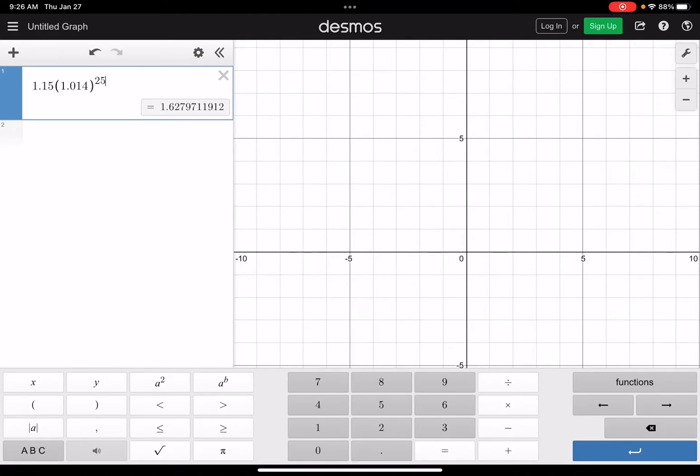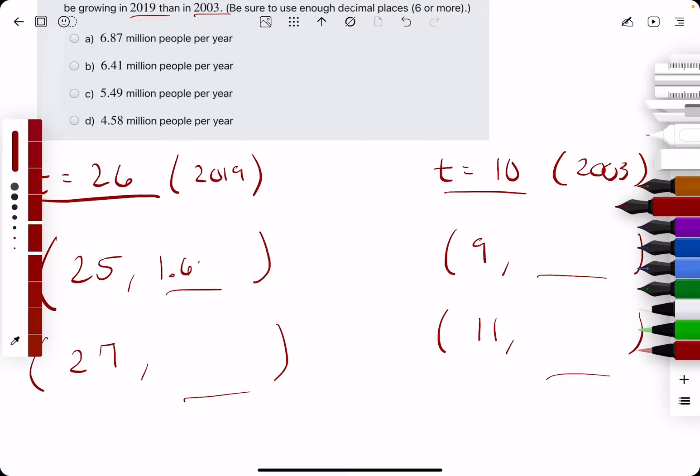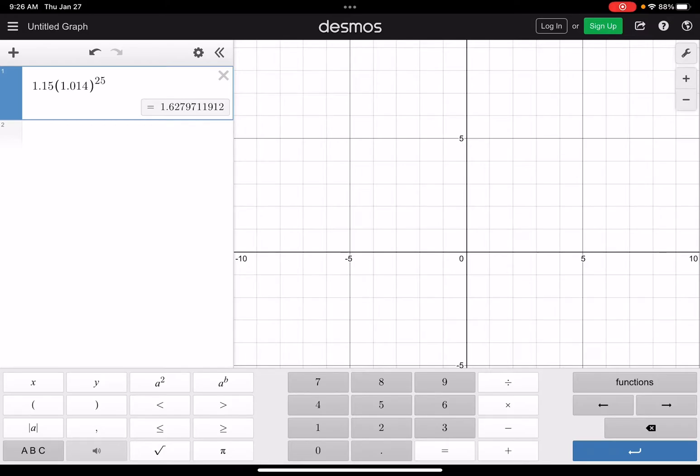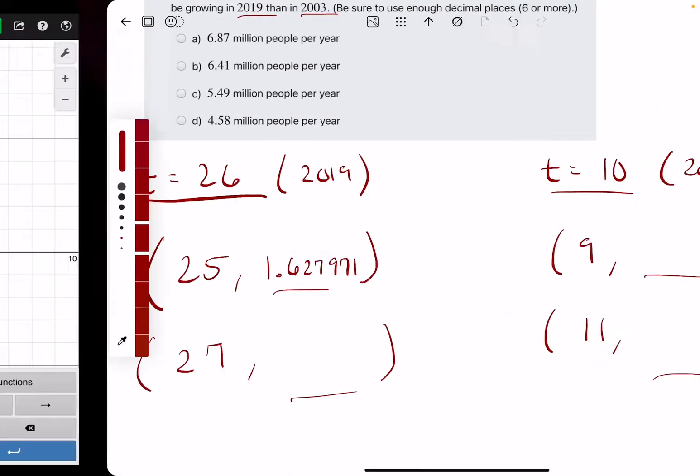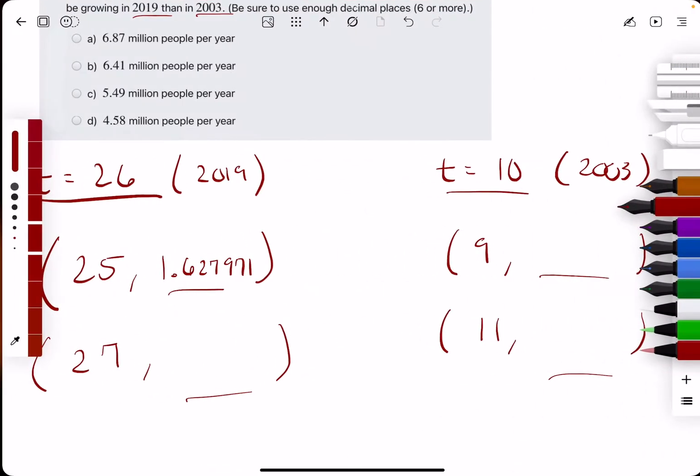First, so we're going to do 1.62797. I'm going to go ahead and throw on a 1. And then we'll change 25 to a 27. We get 1.673873.